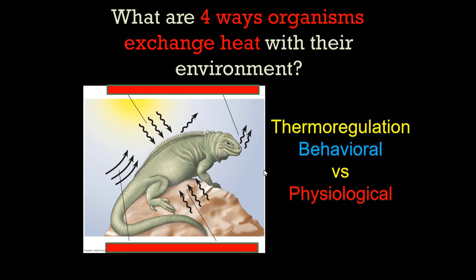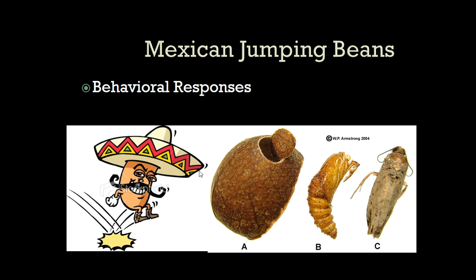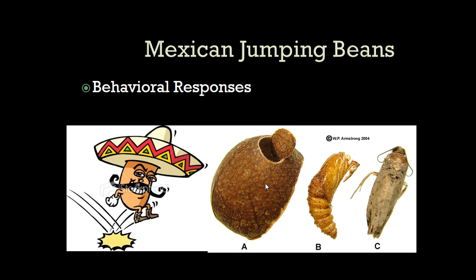There are four different ways organisms exchange heat with the environment — behaviorally or physiologically. Heat can travel in waves: an iguana sits on top of a rock in the sun because infrared waves heat it up — radiation. We can lose heat through evaporative cooling, like panting. A lizard sitting on a rock conducts heat straight in through contact — conduction. And hot air rising and cold air sinking creates wind currents — convection, which is why a fan feels good. Mexican jumping beans are a behavioral example: a parasitic moth grub inside jumps to find shade if it gets too hot on the road, so it doesn't cook itself.